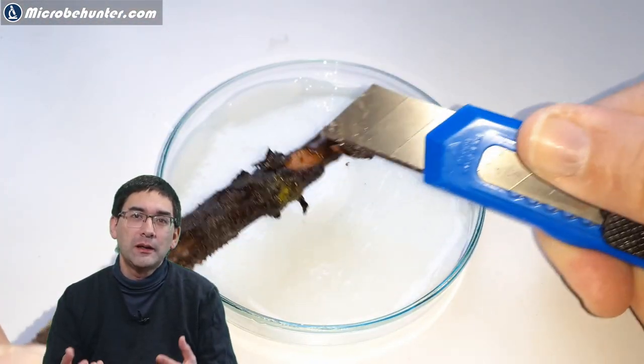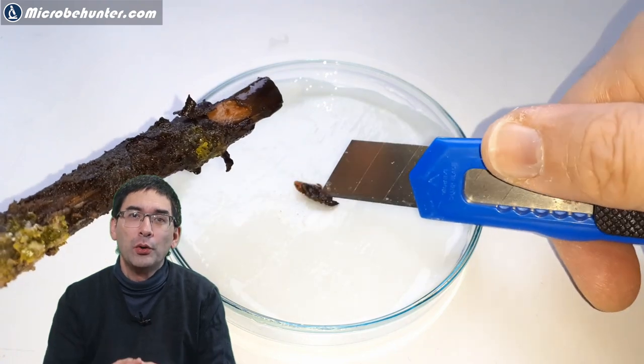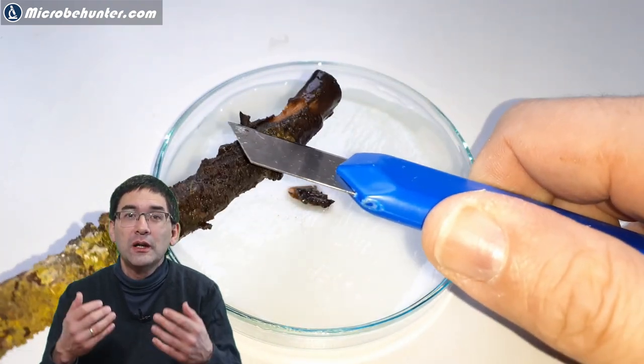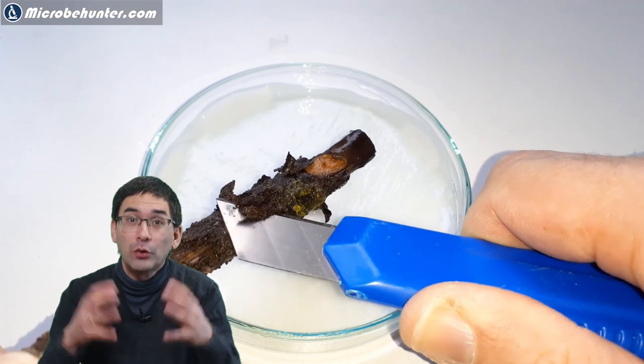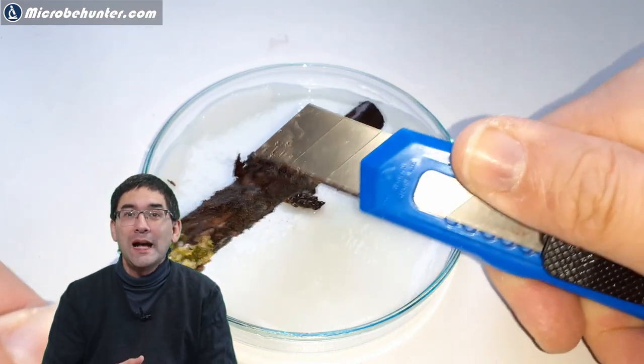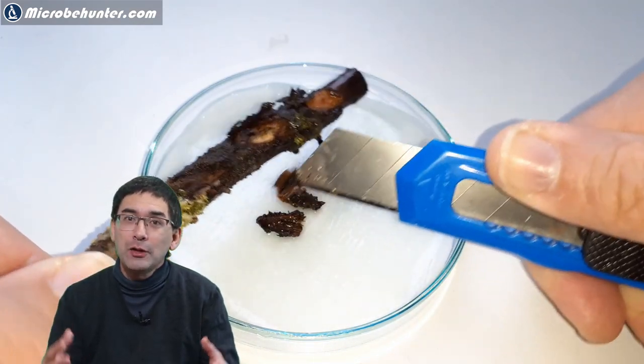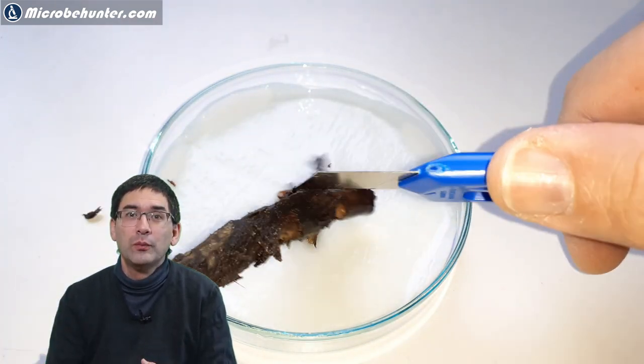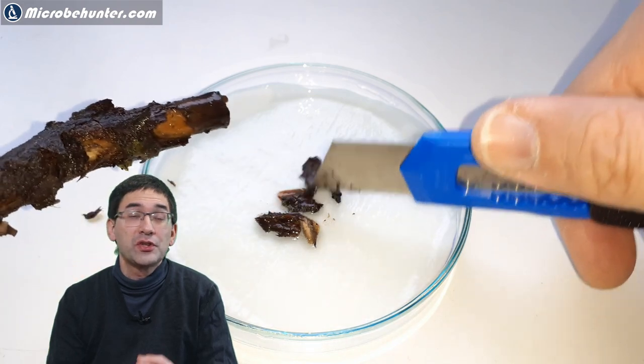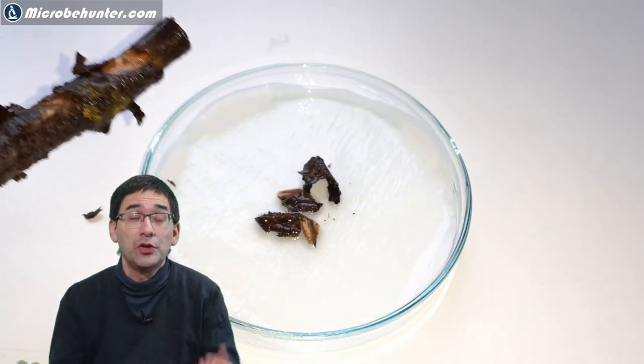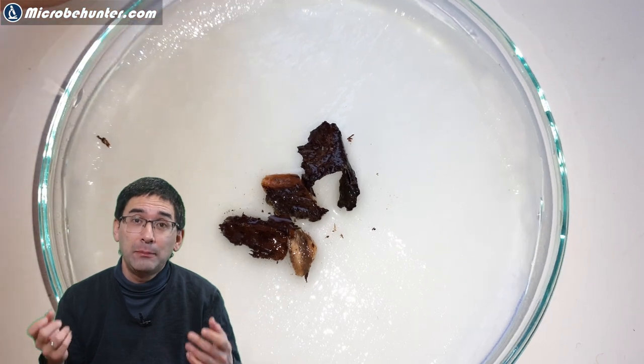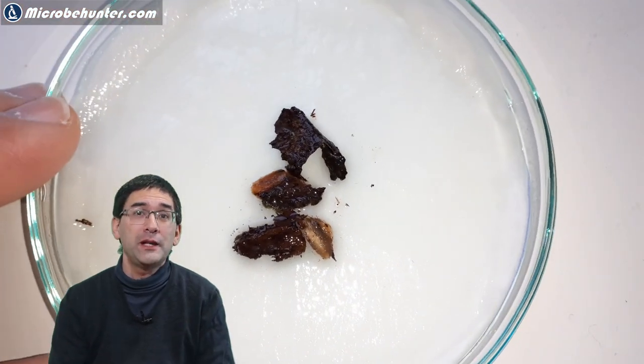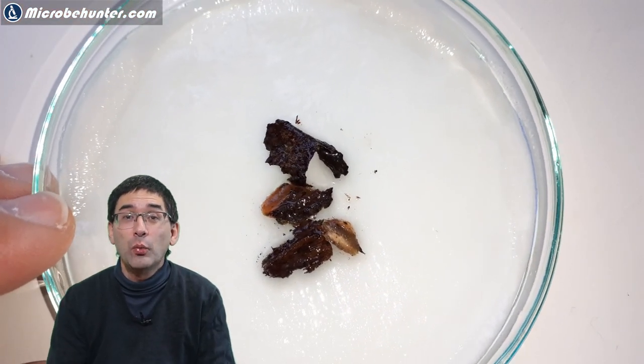I'm going to scratch some of the decomposing wood into the wet filter paper or on top of it. And then I have to be patient because what I'm going to do now is add a little bit of food, which is a crushed wheat grain or a cornflake or oats. I just added that and placed a lid on top of the petri dish and then I had to simply wait.